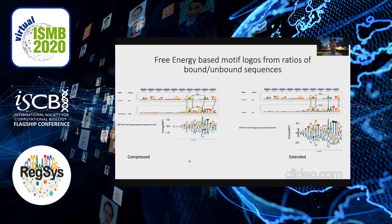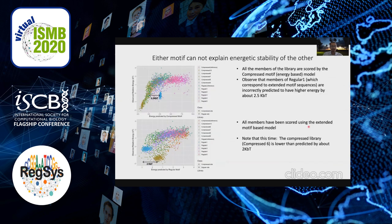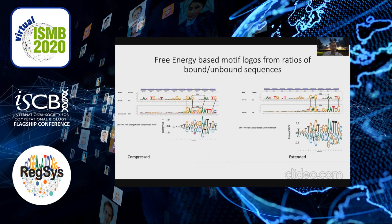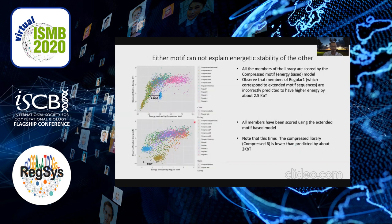We actually learned the presence of both binding modes. These are the energy logos we learned. Using the energy logos learned for binding, you can score every sequence in your library. If you use the compressed motif energy model to score every sequence, you see this blob in blue that is actually much lower in energy than predicted by the compressed motif model.